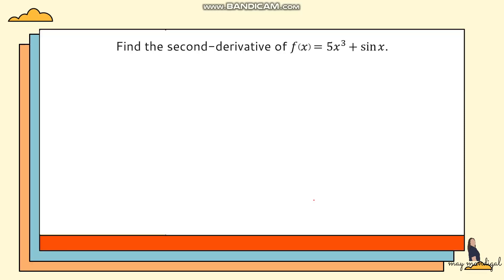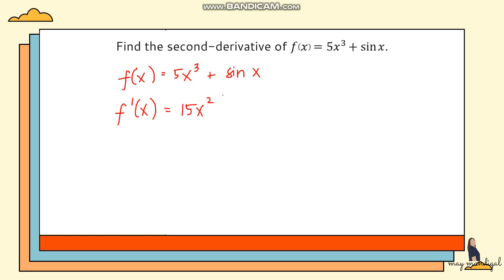Let's try an example: find the second derivative of f(x) = 5x³ + sin(x). Since we need the second derivative, after getting the first derivative we still have to differentiate again. So let's write f(x) = 5x³ + sin(x). The first derivative is f'(x) = 15x² + cos(x).